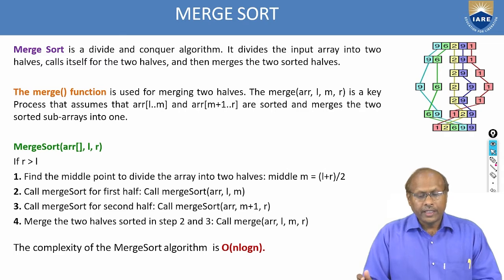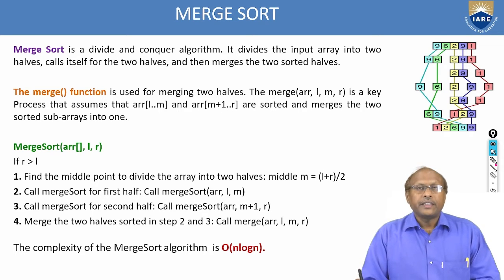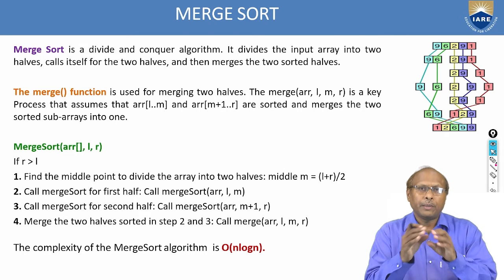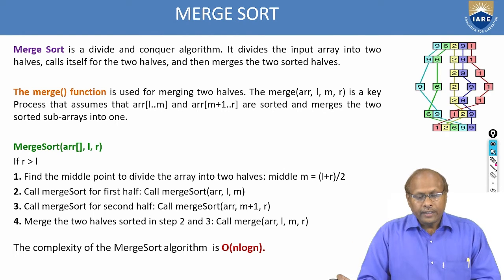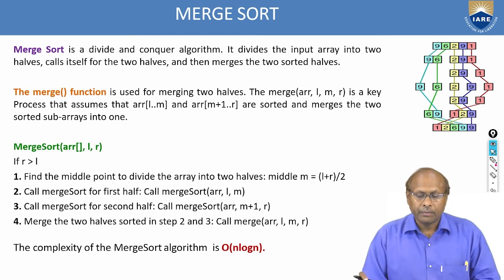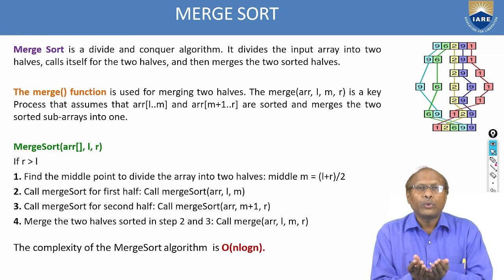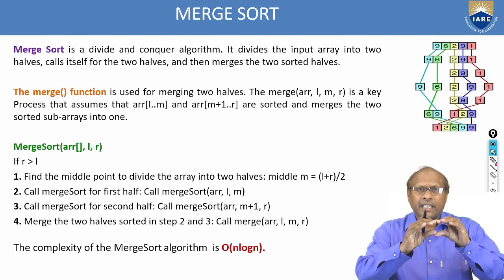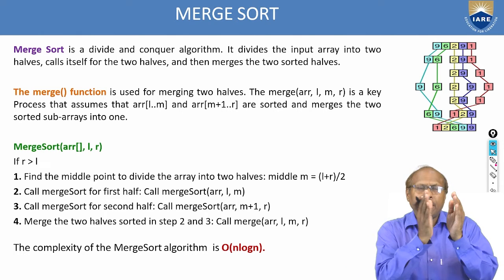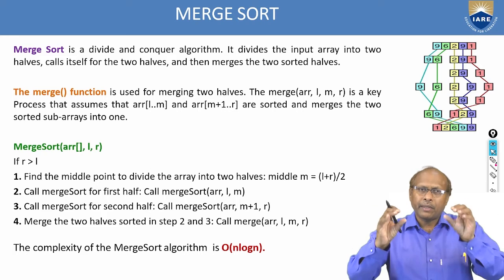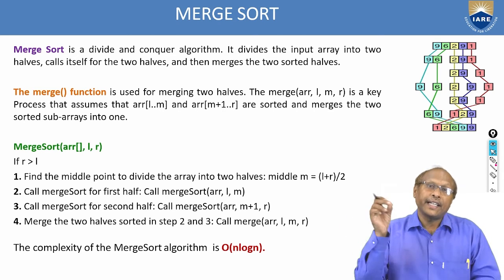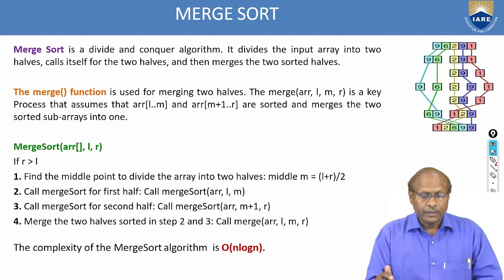Merge Sort is a divide and conquer algorithm. It divides the input array into two halves. Whatever input you are giving, it will divide into two halves, and each half will be sorted separately, and finally both have to be merged together — because the name itself is MERGING. The merge function is used for merging two halves. Whenever we are giving one entire array, that array will be divided into two halves.